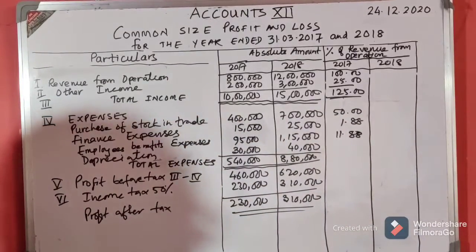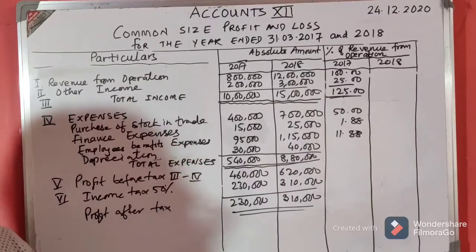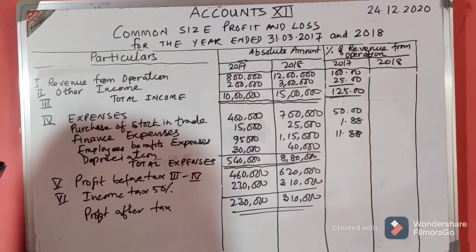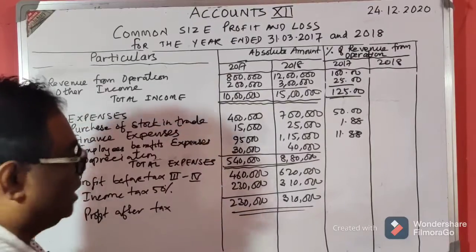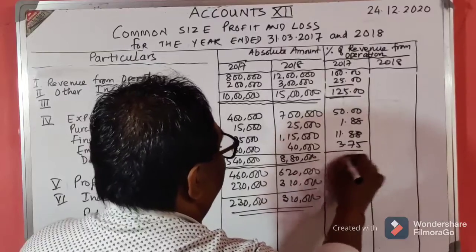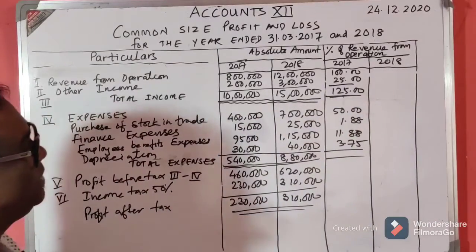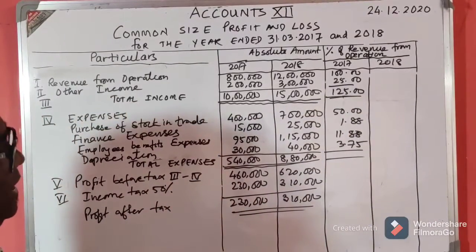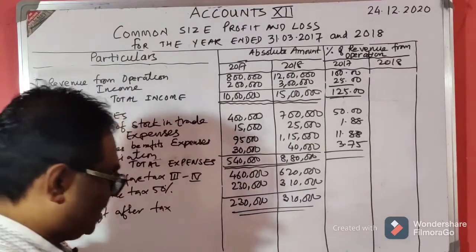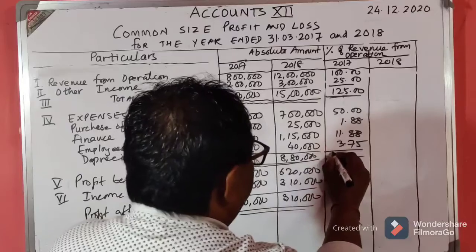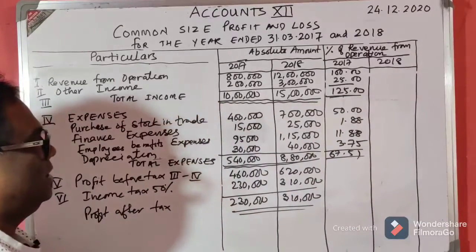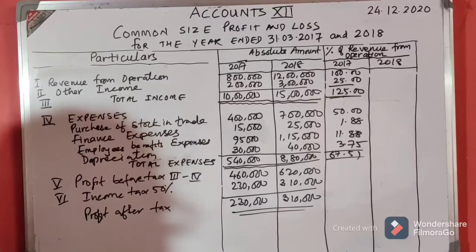Depreciation is 30,000: 30,000 divided by 8 lakhs into 100 gives 3.75 percent. Adding all expenses: 50 plus 1.88 plus 11.88 plus 3.75 gives total expenses of 67.51 percent.